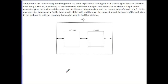So in this problem, your parents are redecorating the dining room and want to place two rectangular wall sconce lights that are 25 inches wide along a 10 foot 8 inch wall. So the distance between the lights and the distance from each light to the nearest edge of the wall are the same. Let the distance between a light and the nearest edge of the wall be x feet. Write an expression in terms of x for the total length of the wall and then use the expression and the length of the wall given in the problem to write an equation that can be used to find the distance. So the first thing is it was really nice that they gave us a picture of this scenario, but I would highly suggest that if they didn't, it would be very smart to actually create a similar representation here so that we can see what this is. It helps us to get a better understanding of it.